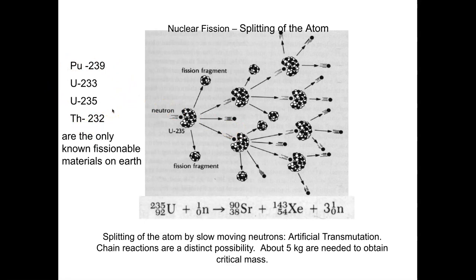These are our nuclear fuels used in nuclear reactors and our weapons-grade fission materials. A slow-moving neutron splits the nucleus into very stable fragments and releases three more neutrons. Those fragments aren't always completely stable, meaning they themselves can undergo beta radiation, so fission products may have half-lives with dangerous emissions like beta particles.